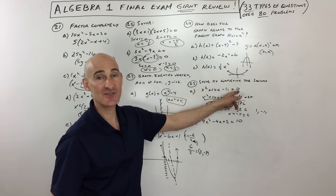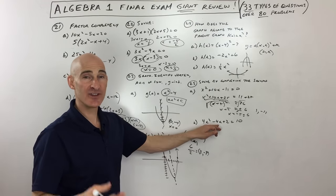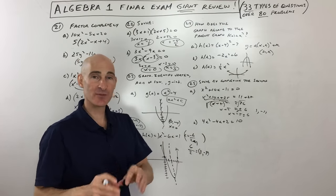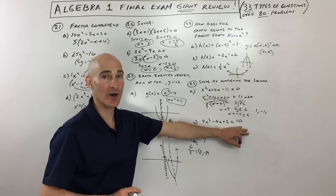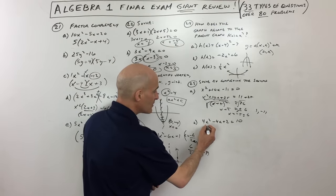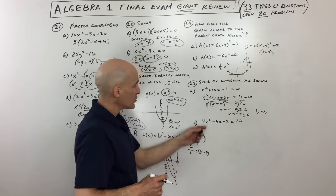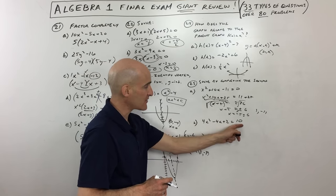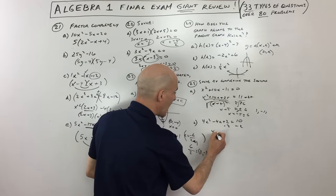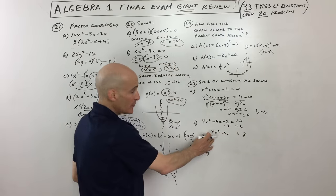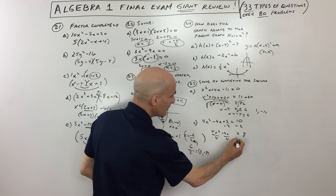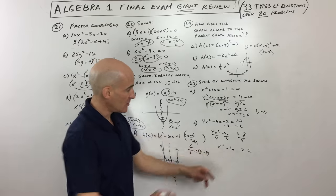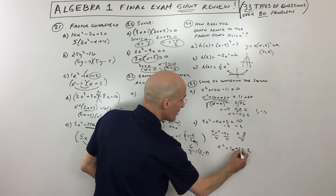For the second problem with leading coefficient 4, subtract the constant to the right side first, then divide everything by 4 to make completing the square easier. Take half of the coefficient in front of x — half of negative 1 is negative one-half — and square it to get one-fourth, adding that to both sides to complete the square.